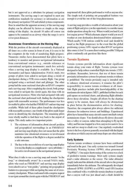This study makes two important points. 1. The existence of information about aircraft position and geographical surroundings in an FMS/RNAV and moving map display does not mean that the pilot maintains true situational awareness or involvement with the operation of the flight to a degree needed for a safe outcome. 2. The key to the successful use of a moving map display is to use the display as a supplement, not a substitute, for active involvement in the navigational process. In a second NASA study, pilots who used an FMS/RNAV and moving map display were asked to act as tour guides, pointing out geographical features to a passenger while navigating the same set of cross-country checkpoints. When confronted with a surprise request to navigate around the circuit again with the FMS/RNAV and map turned off, these pilots performed as well as anyone else. The simple task of pointing out geographical features was enough to avoid the out-of-the-loop phenomenon.